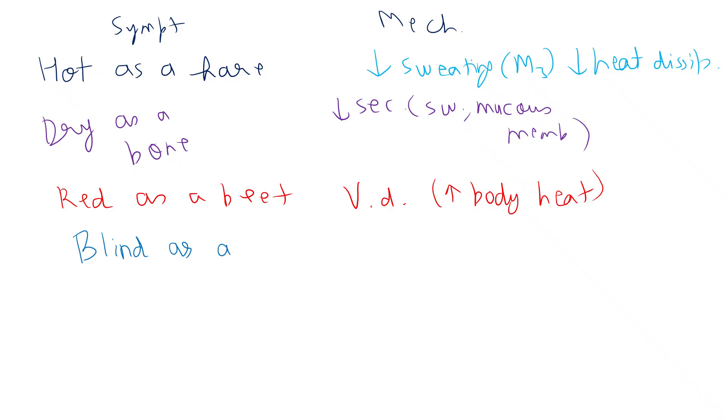Blind as a bat - paralysis of ciliary muscle known as cycloplegia. Double vision will occur. Paralysis of iris sphincter causes mydriasis - dilation of pupil. This occurs due to blockade of M3 receptor and unopposed activity of alpha-1 receptors in the iris.